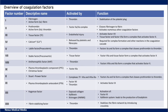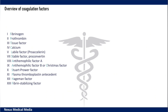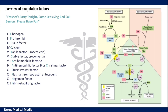This is a lot to take in. After watching the secondary hemostasis video, you need to come back here to review because if you look at the functions, there is a way to remember the factors. Just remember there is no factor 6. The mnemonic says: 'Freshers party tonight. Come, let's sing and call seniors. Please have fun.' In the next video, we'll talk about secondary hemostasis — there will be the intrinsic pathway, extrinsic pathway, and the common pathways. So stay tuned.